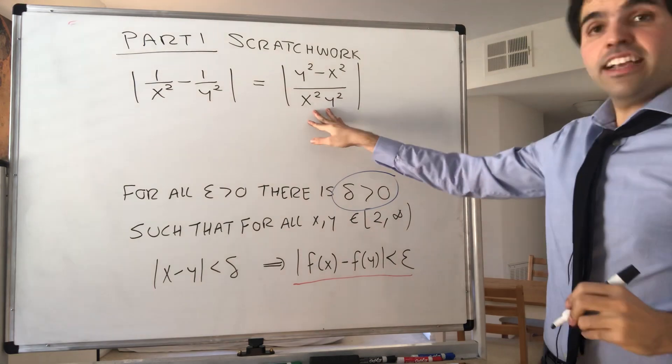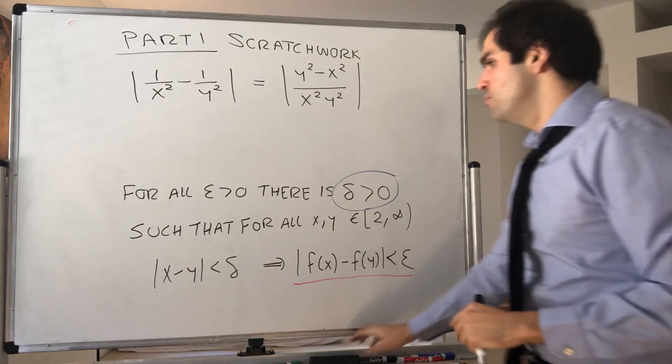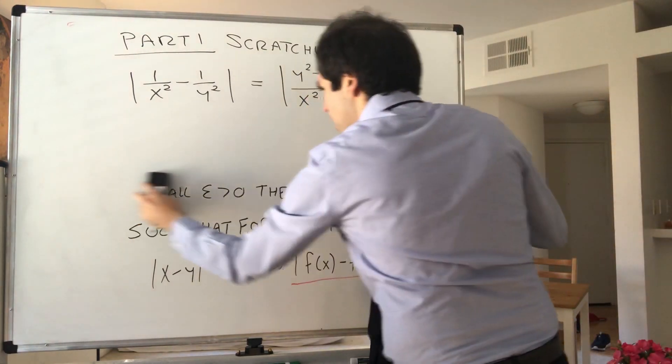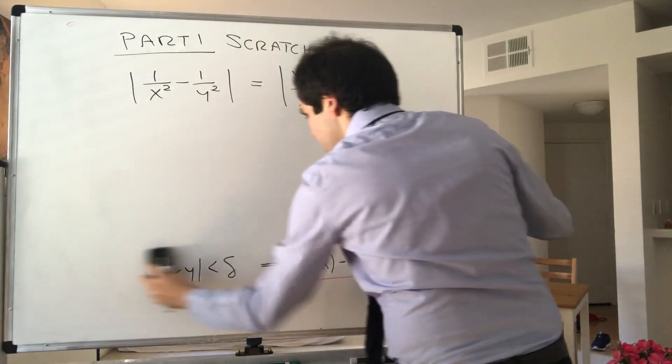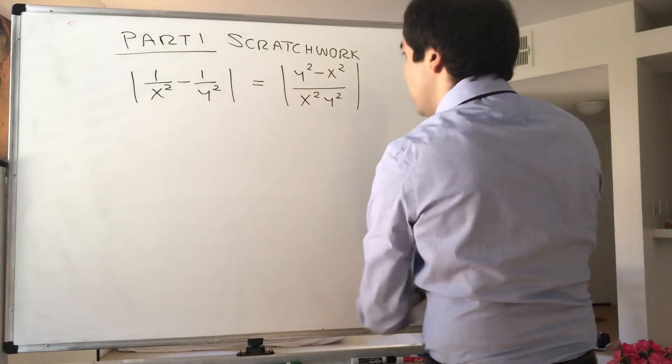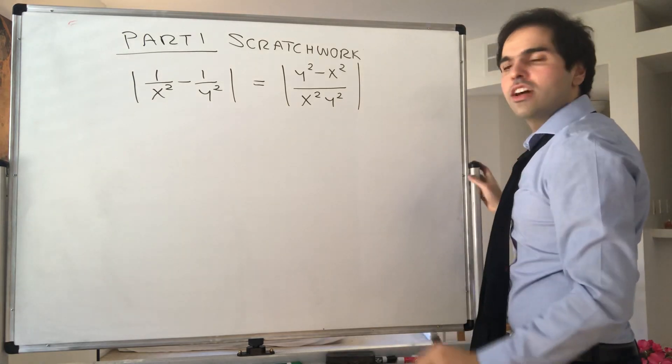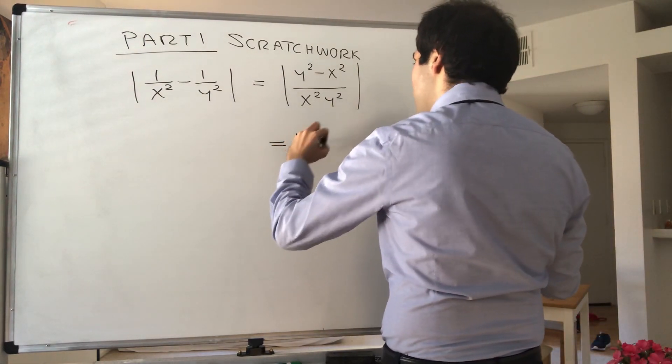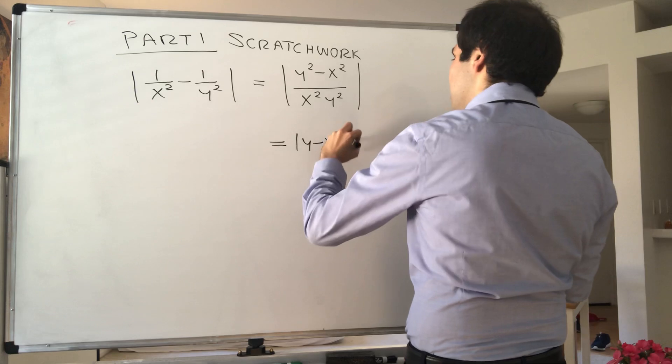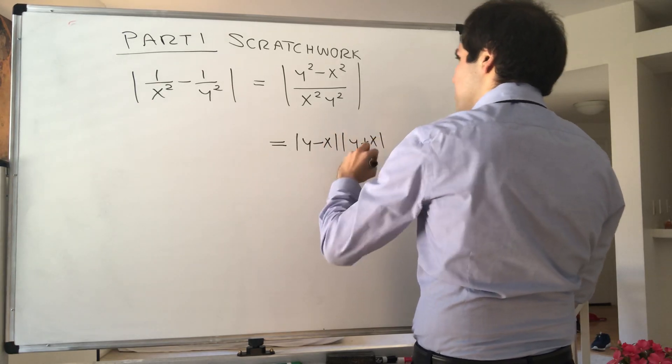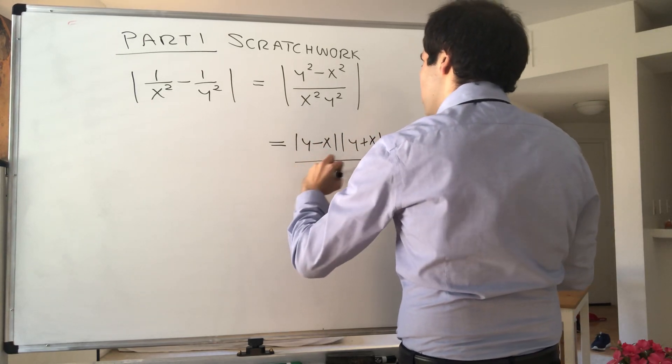That said, x squared and y squared are non-negative, so we can remove the absolute values and just put them on the numerator. On the other hand, the numerator can be factored out very nicely. This becomes absolute value of y minus x times y plus x over x squared y squared.